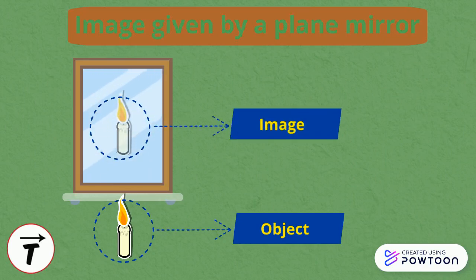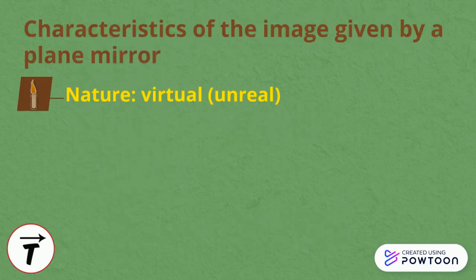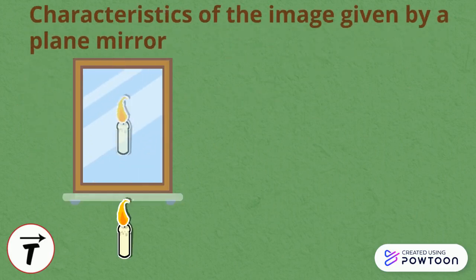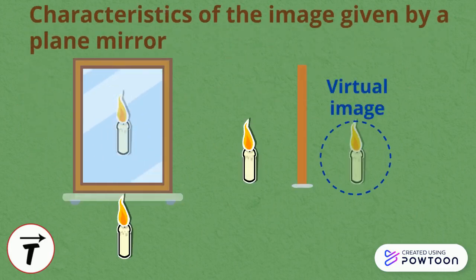So what are the characteristics of the image given by a plane mirror? First, the nature of the image is virtual. The image given by a plane mirror is virtual — that is, unreal — because the light doesn't actually start behind the mirror.